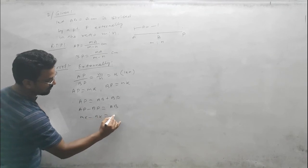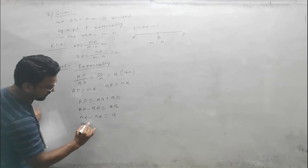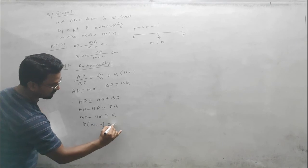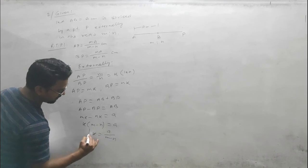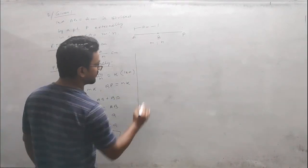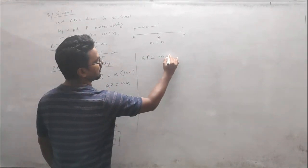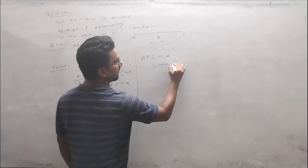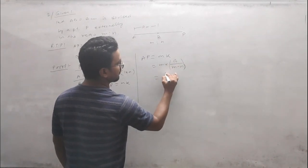So mk = a + nk. Taking k common: k(m - n) = a. Therefore k = a/(m-n). Now AP = mk, so substituting k = a/(m-n), we get AP = m × a/(m-n) = ma/(m-n).